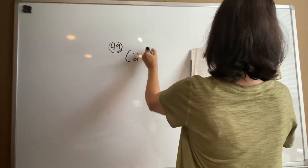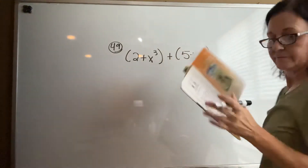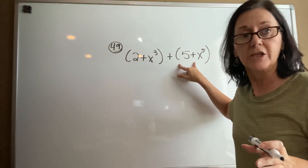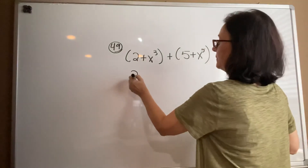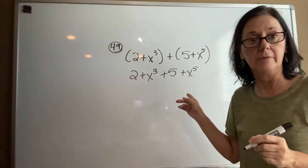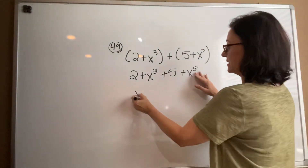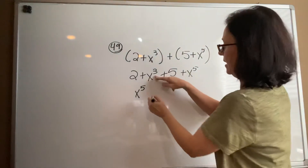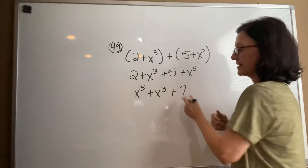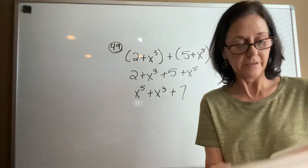Number 49: (2 + x cubed) plus (5 + x to the fifth). There's a positive sign on the outside of the parentheses, so none of the values inside change. Eliminate the parentheses and write in proper form — descending exponential order. The x to the fifth goes first, then x cubed, then combine the constants 5 and 2 to get 7. The answer is x to the fifth plus x cubed plus 7.